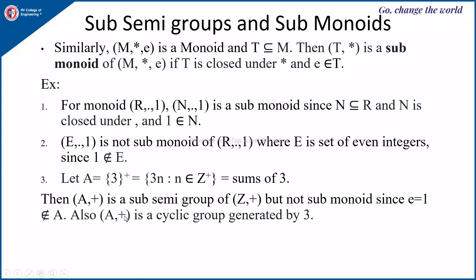Also, (A, +) is a cyclic group generated by 3.